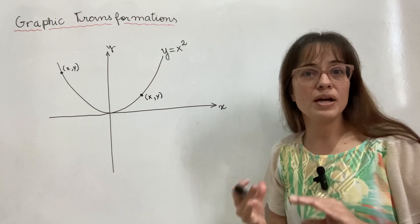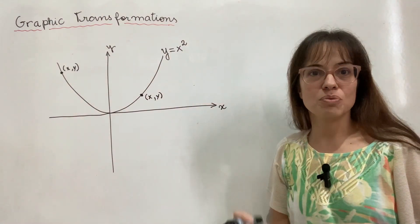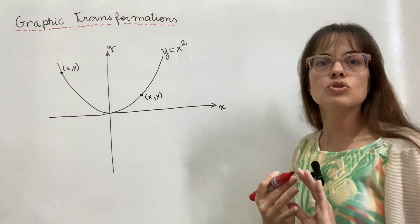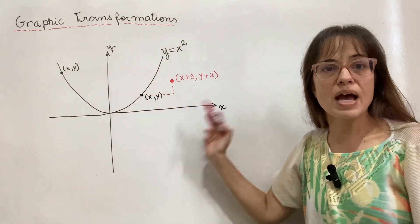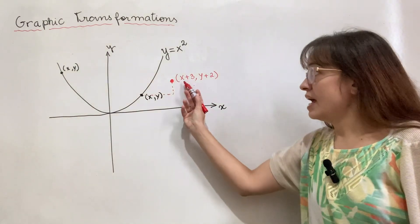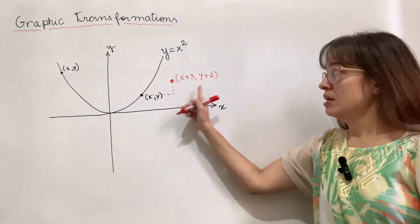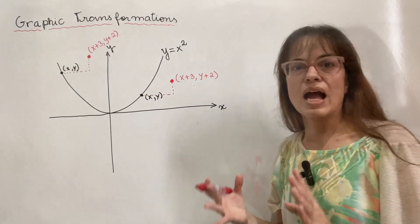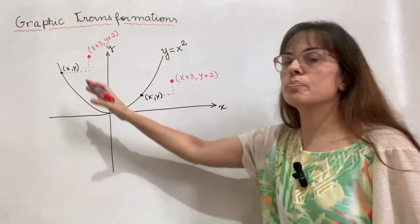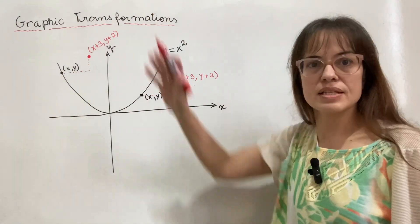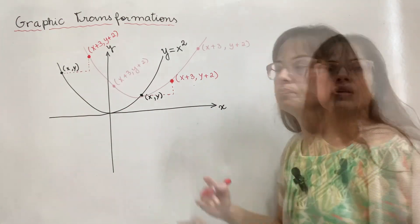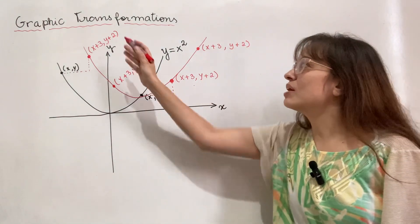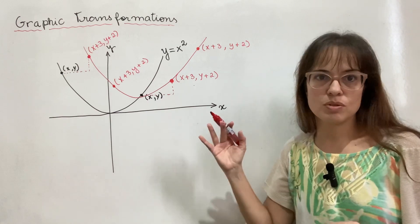From each point on this curve, I'm going to do the same translation: three to the right and two up. There's nothing backwards happening here — x plus three because x has moved to the right, y plus two because y has moved up. I want this to happen to all of the points on the black curve, so I'll get a red curve that has been translated three to the right and two up. Every single point on the red curve is the translation of a point on the black curve.